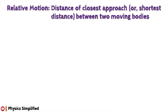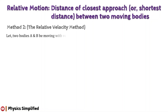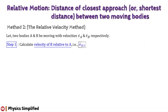Now, the second method — the relative velocity method. Again, we will divide this method into three simple steps to understand the logic behind this. Suppose two bodies A and B are moving with velocities vector v_A and vector v_B respectively. In step one, we will calculate the velocity of one of them relative to the other. Let us calculate the velocity of B relative to A, denoted by vector v_BA.